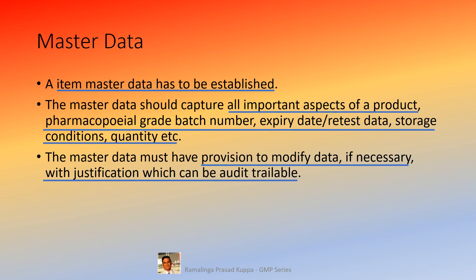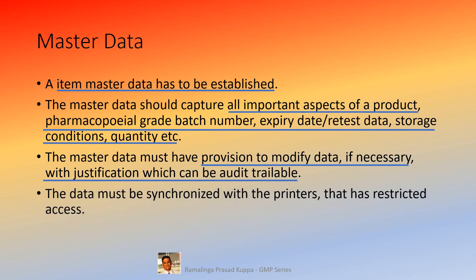This is part of compliance to ALCOA principles: A is for data attributable to an individual, L is for legible data, C is for contemporaneous recording, O is for capturing the data on the original record, and the last A is for accuracy of the data. The data must be synchronized with the printers that have restricted access. Access to such printers should be restricted to only authorized users. It is recommended to have both physical and electronic controls for such printers.